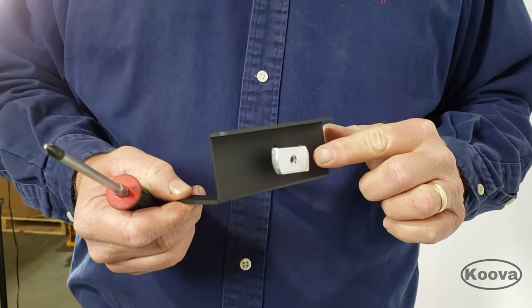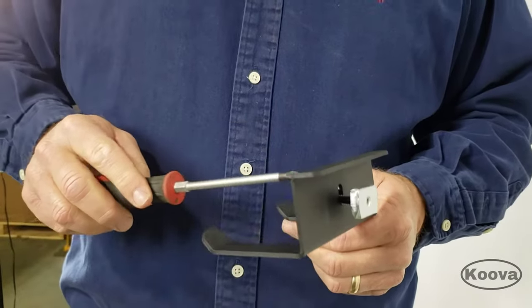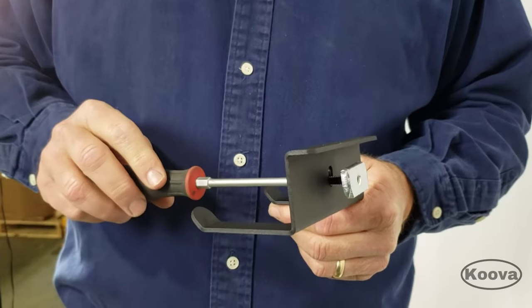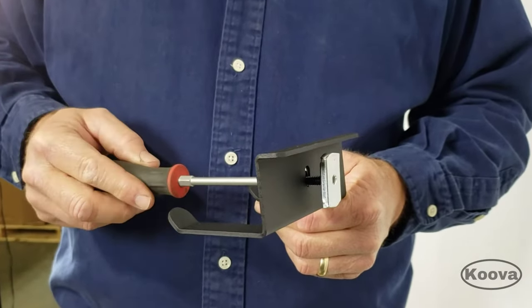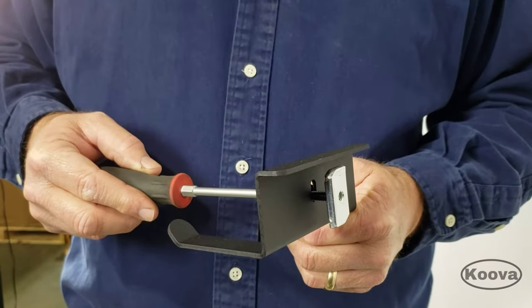Before we place it on the strut, I want to show you how this works. When you go to tighten this bolt by turning it clockwise, the nut's going to rotate 90 degrees into position and then lock into place.